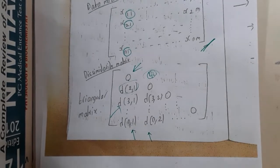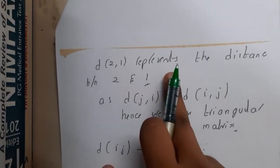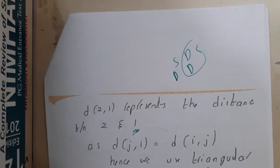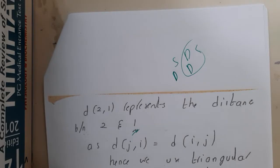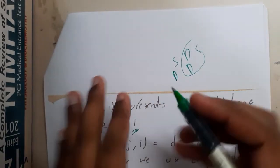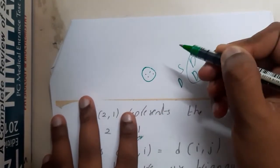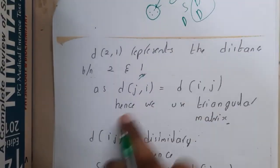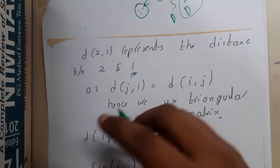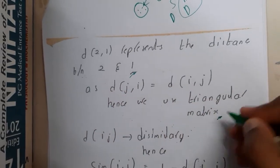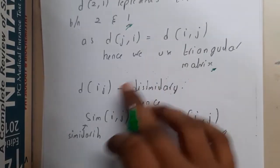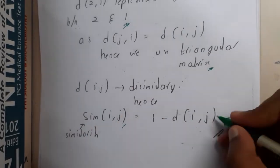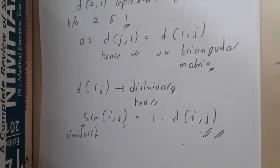We can represent data in a dissimilarity matrix and will be calculating each value with numerical examples. D of two comma one represents the distance between objects two and one. In clustering, objects that are alike are in a single cluster — if the distance is closer they are similar, if the distance is far they are dissimilar. Since D(i,j) equals D(j,i), we can use the triangular matrix and do not need to solve the full matrix. The formula is: similarity plus dissimilarity equals one.